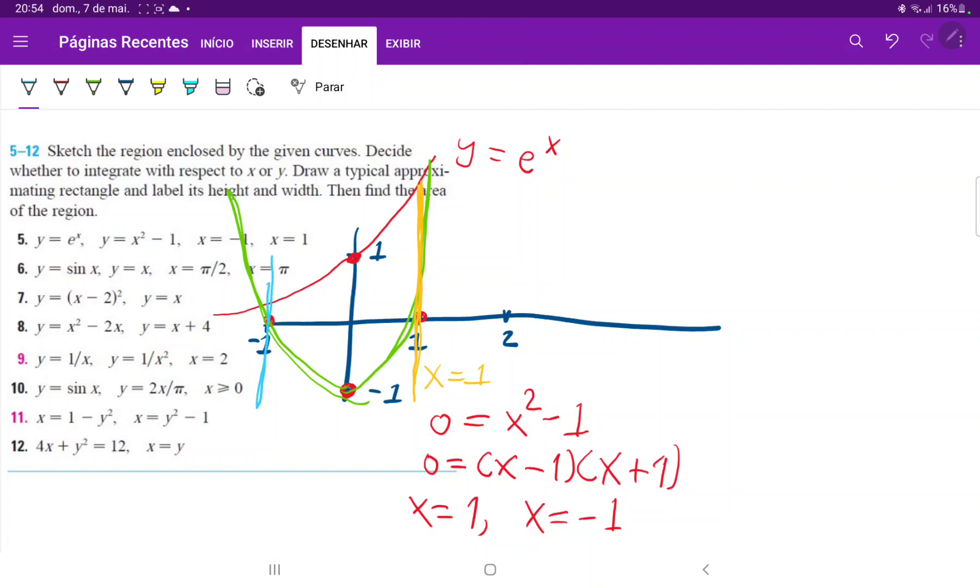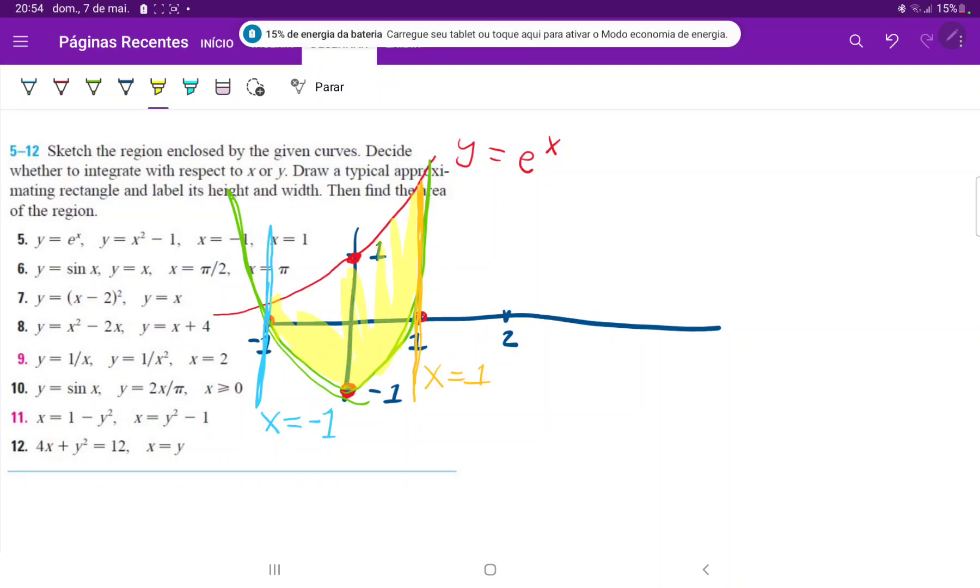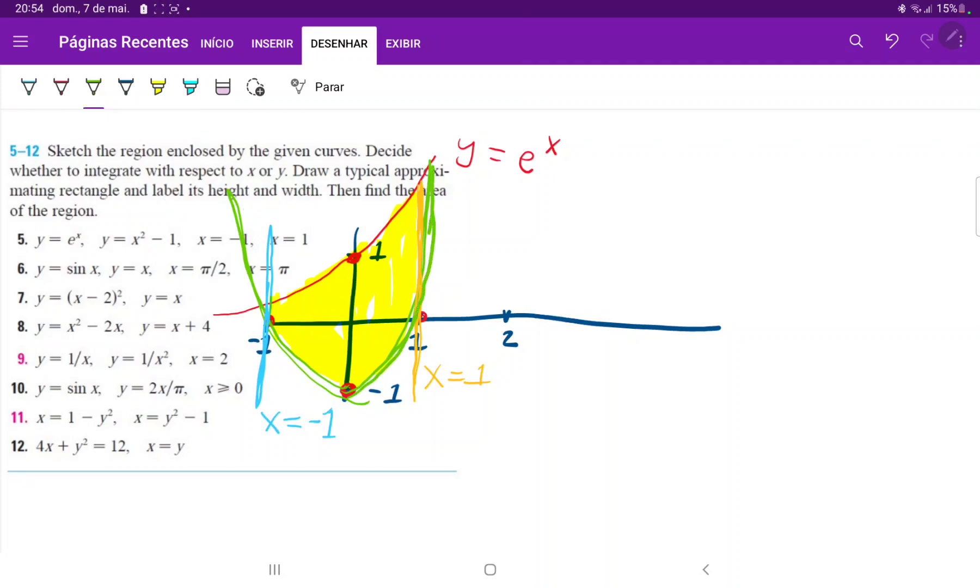This line is x equals negative one. This is our area, and I'll shade it in. We can see that for all points here, the upper function is e to the x, and the lower function is y equals x squared minus one.